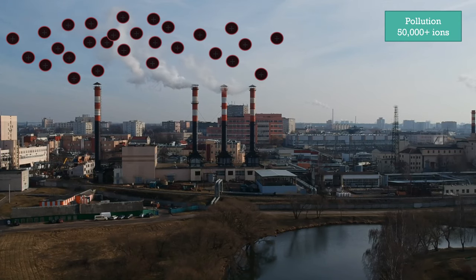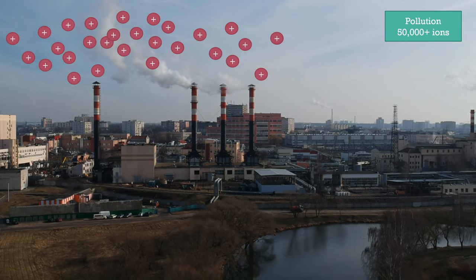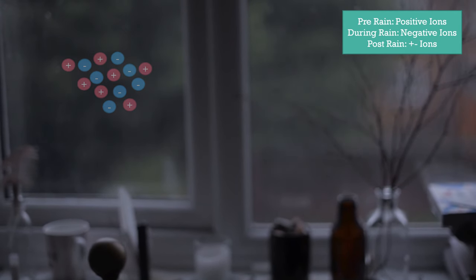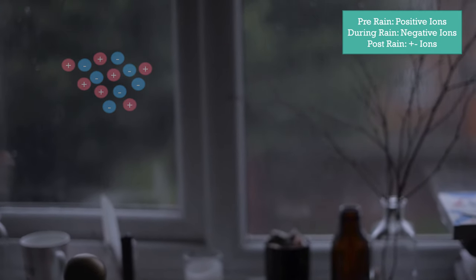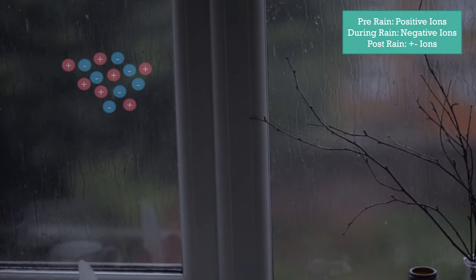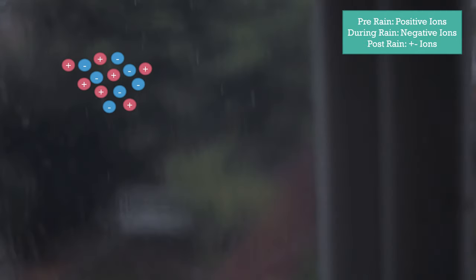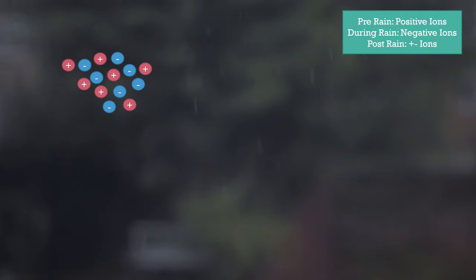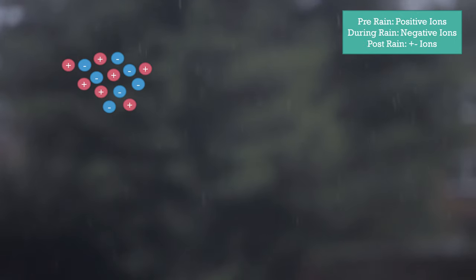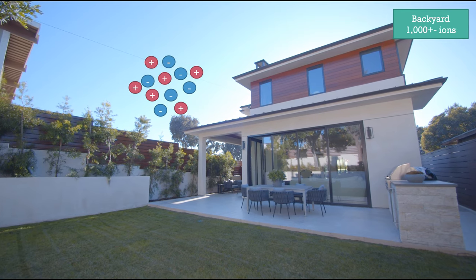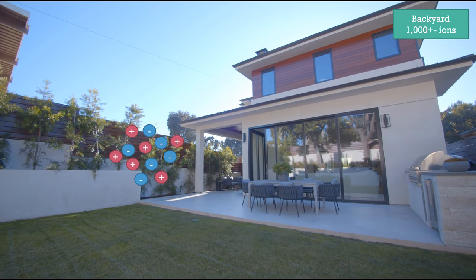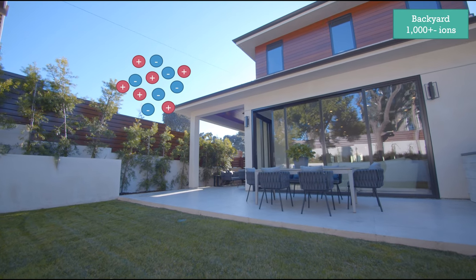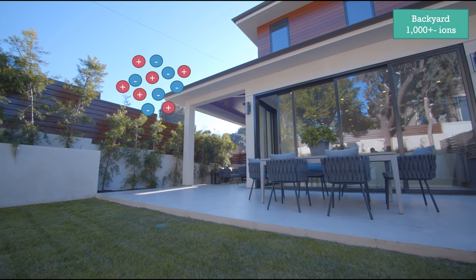Air pollution can have 50,000 positive ions — not good. On days that it rains, you will get positive ions before it starts raining. During the rain, you'll actually get negative ions. After it stops raining, you'll have both positive and negative ions. So even though within the home you have low ions, if you go right to your backyard, you'll actually have an increase in total air ions.